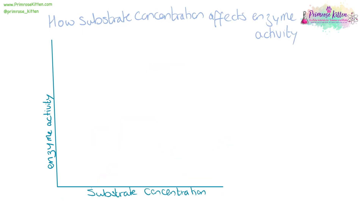There are only a certain number of active sites on an enzyme, so once they are full up, the enzyme activity can't keep increasing. While they are filling up, the enzyme activity will increase with substrate concentration. But when they are full up, increasing the substrate concentration won't increase the enzyme activity any further.